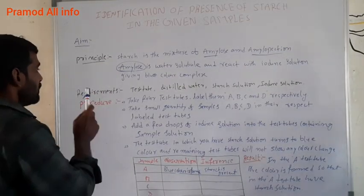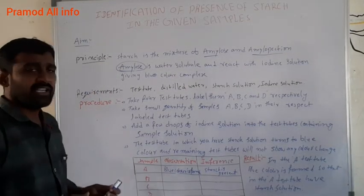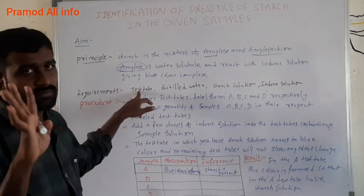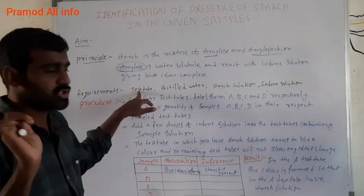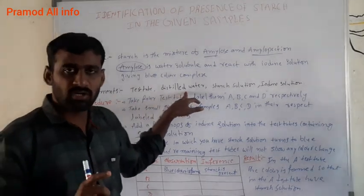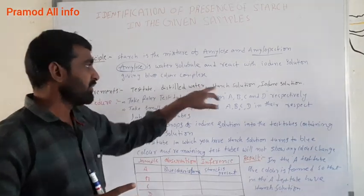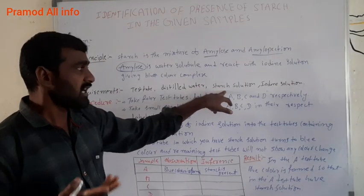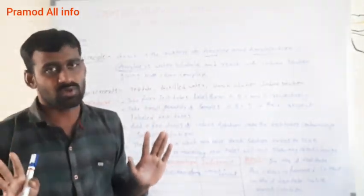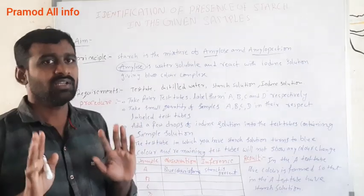This is the principle. For requirements, we can use four test tubes, distilled water, starch solution, and iodine solution.